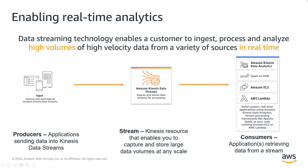Here's a simple architecture that brings all of these components together. What I'd like to emphasize is the consumption part on the far right. Within the AWS family, you can see that you have a number of options for consuming from Kinesis Data Streams. You have Amazon Kinesis Data Analytics, you can use Spark on Elastic MapReduce, Amazon EC2, and AWS Lambda.